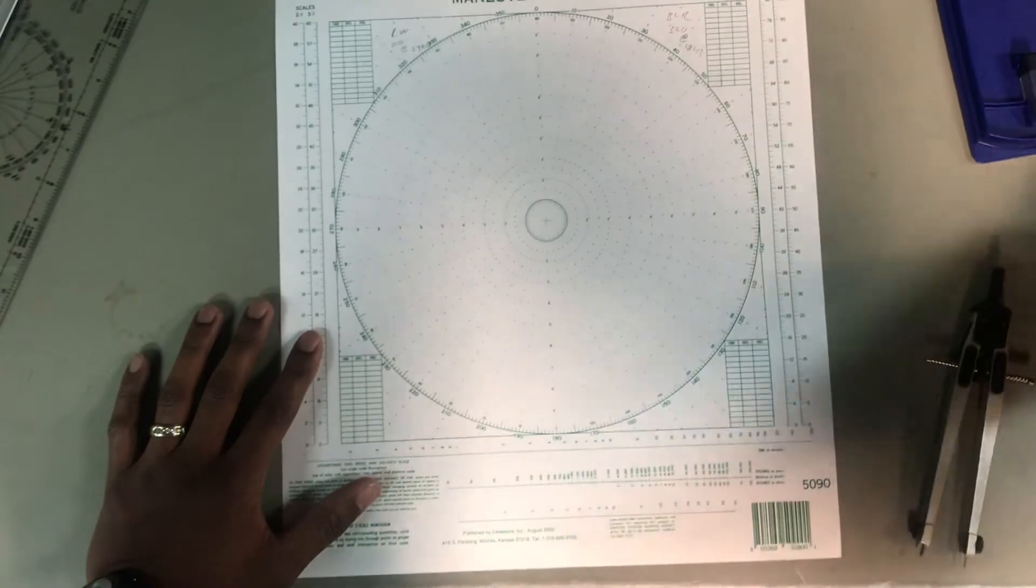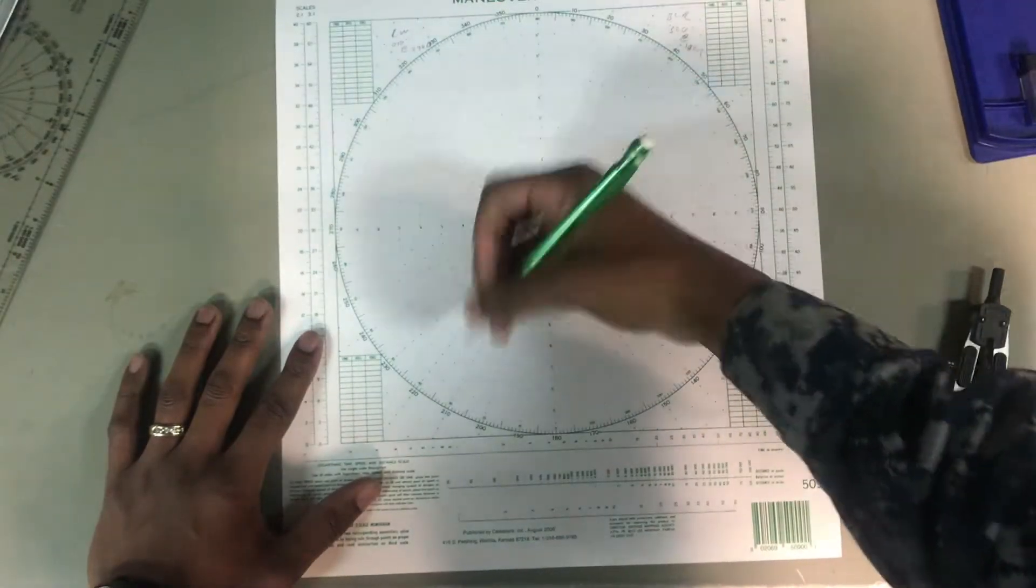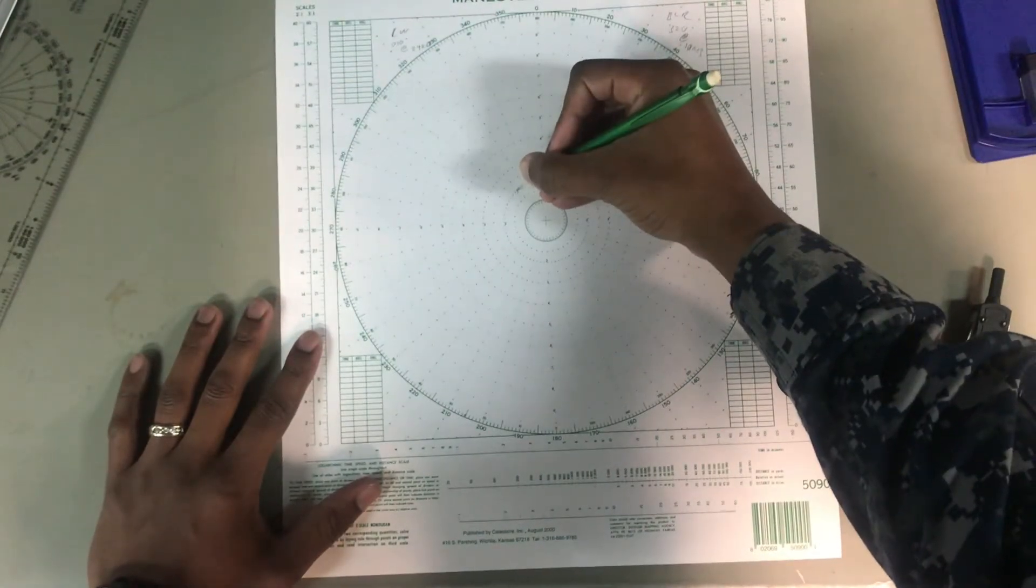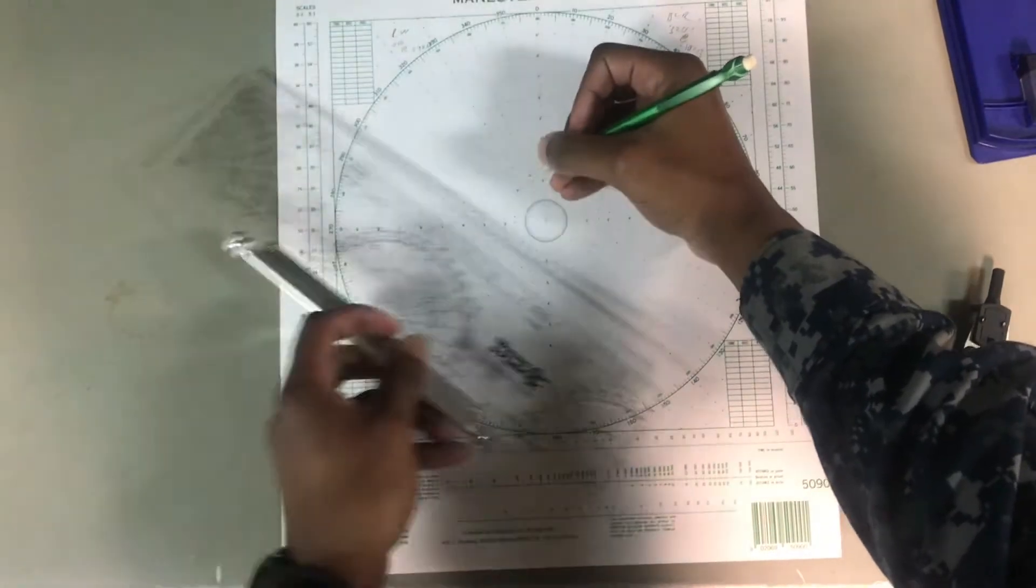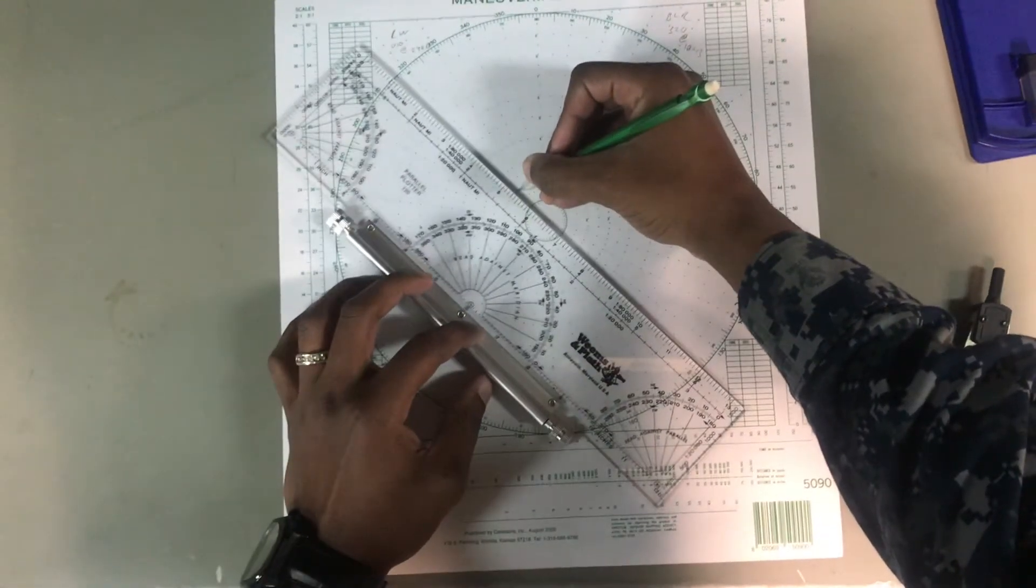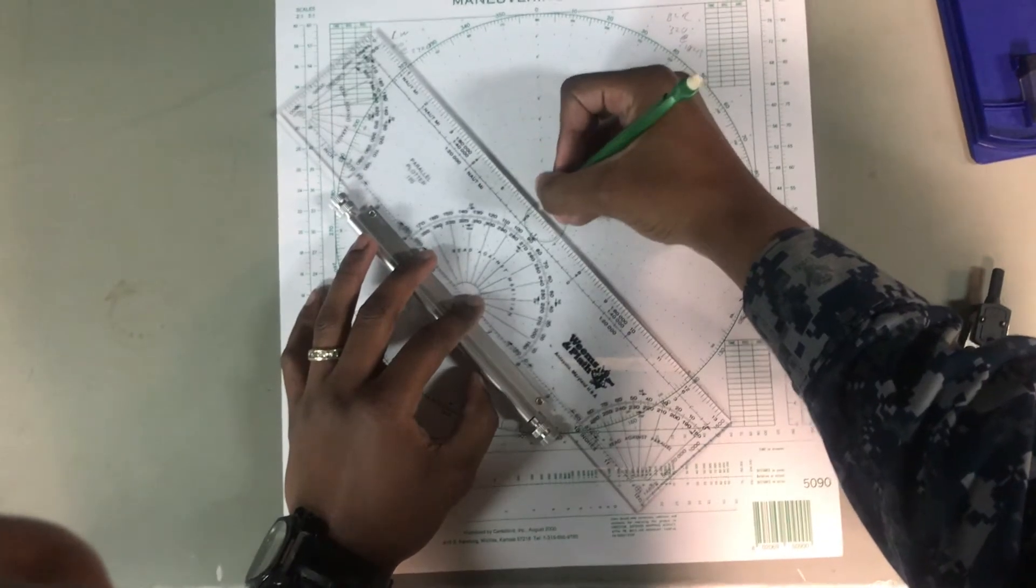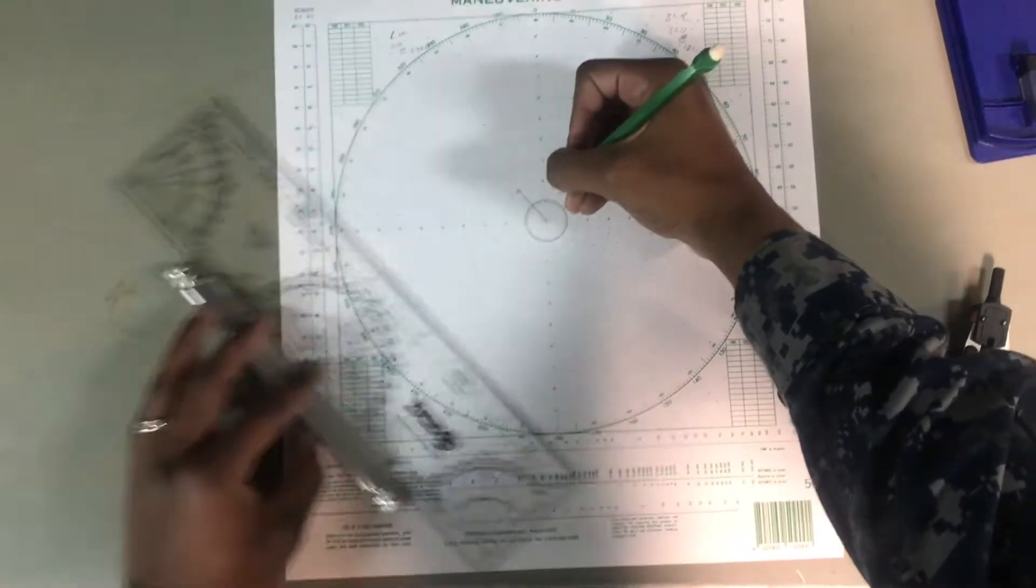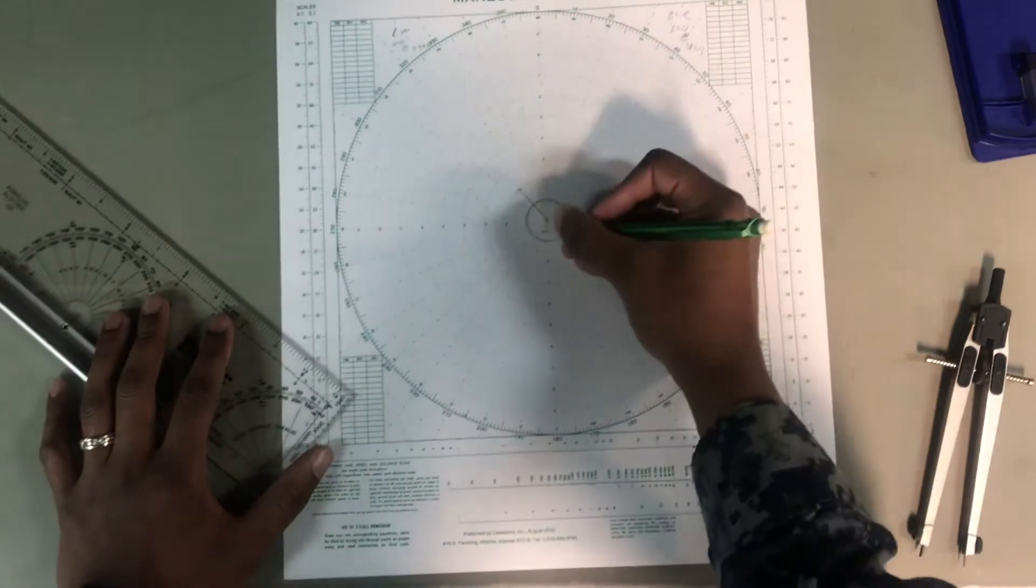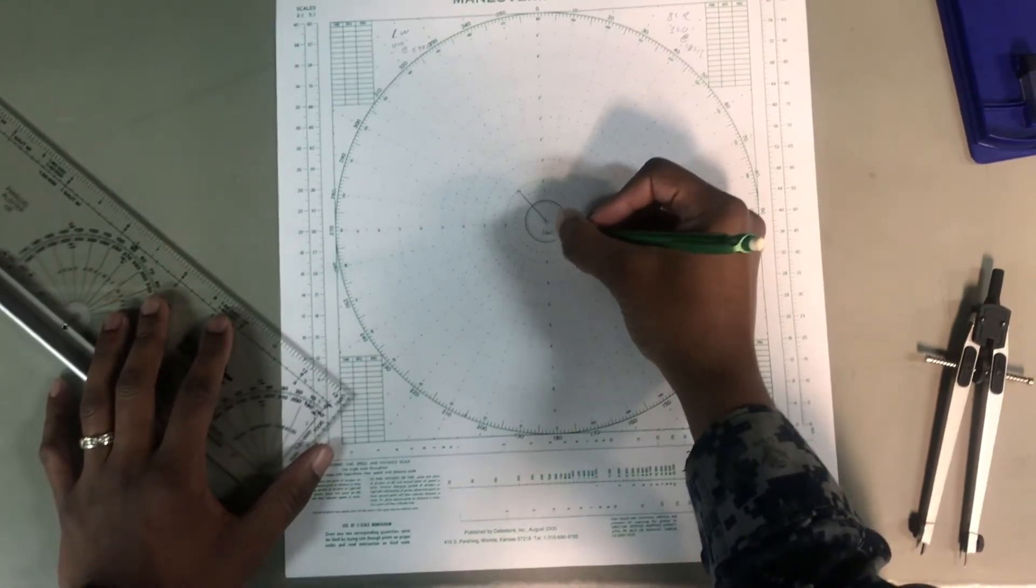Alright, then we can go ahead and draw our arrow. You can go ahead and do your little line so you know exactly which way you're going. Like I said in the previous video. Alright, that's us. Blue Ridge.